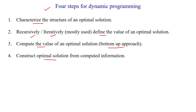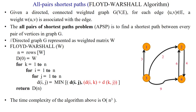Here we will discuss the Floyd-Warshall algorithm. The Floyd-Warshall algorithm is used to find the shortest path between all pairs of vertices in a given graph. The graph has weighted edges and vertices, and the aim is to find the distance between all pairs of vertices.